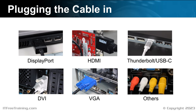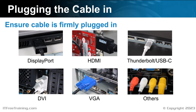The first step, although this may seem obvious, is to make sure the cable is plugged in firmly. Often, if you have a computer that has a black screen, the cable has simply come out. Even if it seems to be in okay, push it in to make sure. If the cable is slightly loose, this can cause the pins not to connect correctly and the signal to be lost. A lot of the time, the cable may just be knocked or come loose.